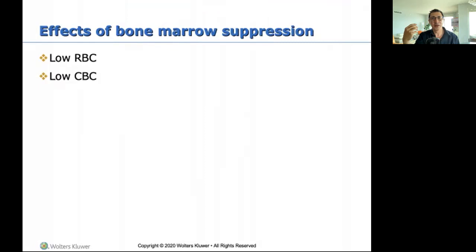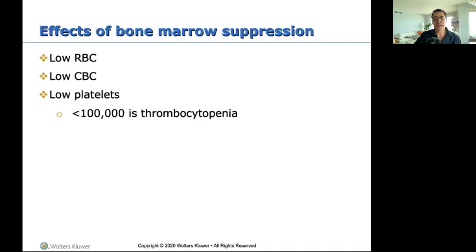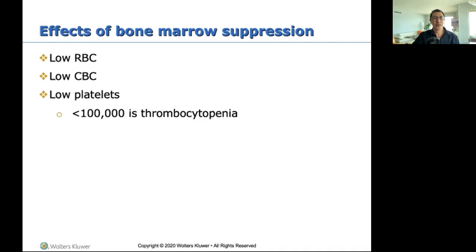Bone marrow suppression significantly lowers immunity from low to near zero. Effects: low RBC — if I don't have enough blood circulating, that's a problem. Low platelets — less than 100,000 is thrombocytopenia, which means the patient is at high risk for bleeding. Platelets patch up holes when we bleed; without them, bleeding won't stop. You'll likely see high-risk-for-bleeding signs posted inside these patients' rooms.